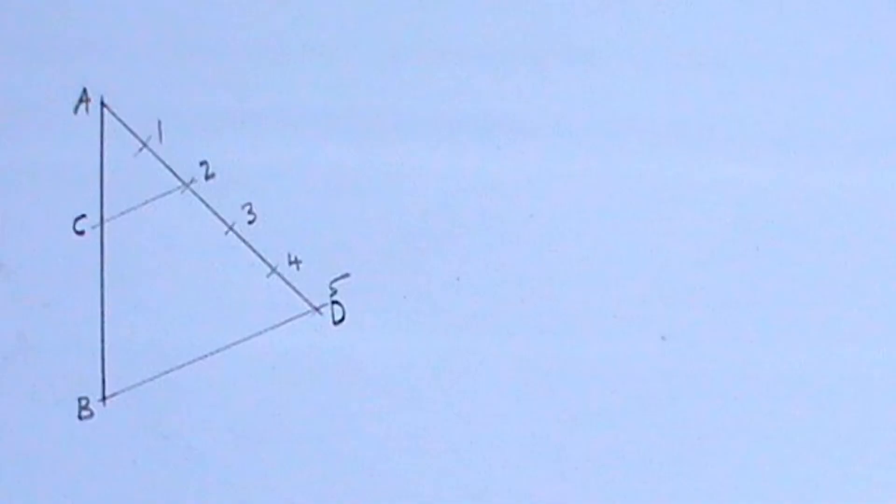Line AB has been divided successfully in a ratio of 2 is to 3. You can always follow these easy steps to divide any line in a given proportion.